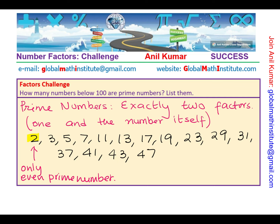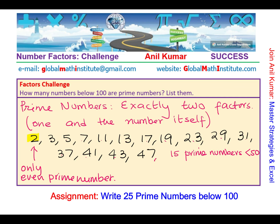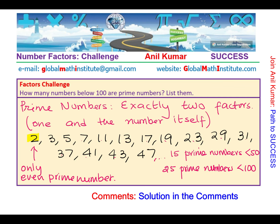So up to 50, I have given you the prime numbers. How many do we have? Counting them: 1, 2, 3, 4, 5, 6, 7, 8, 9, 10, 11, 12, 13, 14, 15. There are 15 prime numbers which are less than 50. I'd like you to extend this list up to 100 as an exercise. However, there are only 25 prime numbers which are less than 100. I'd like you to write down the prime numbers less than 100 in the comments for this video. I'll provide the solution — all the prime numbers below 100 — in the comments also. That should help.